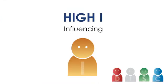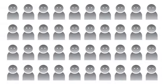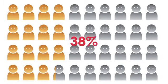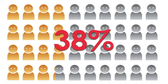High-I. Influencing. People with high-I as their primary behavioral style comprise about 38% of the population, making this group the largest group of the four DISC styles.